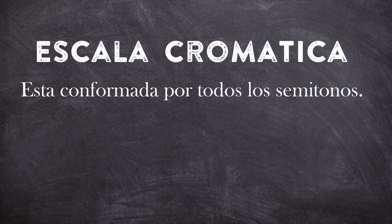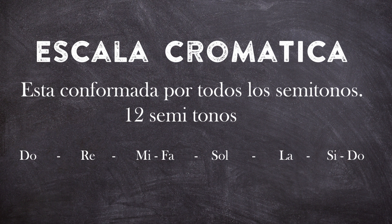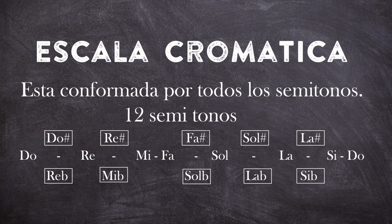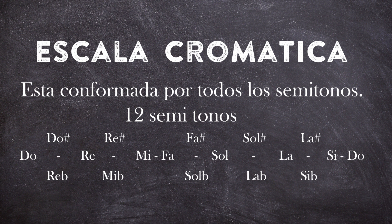Para aprender a sacar una escala mayor, vamos a ver primero la escala cromática, que es aquella conformada por semitonos — tiene 12 semitonos y contiene todos los sonidos musicales. Conocemos los sonidos do, re, mi, fa, sol, la, si, pero entre cada uno de ellos existe otra nota: do sostenido, re sostenido, fa sostenido, sol sostenido y la sostenido. Por debajo tenemos re bemol, mi bemol, sol bemol, la bemol y si bemol. La nota mi no tiene sostenido ni tampoco la nota si; esas pasan directamente a la siguiente nota — mi pasa a fa, y si pasa directamente a do.